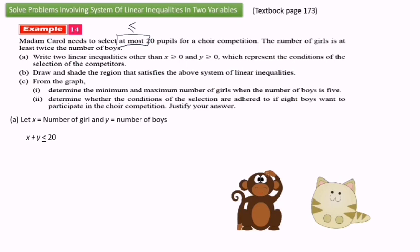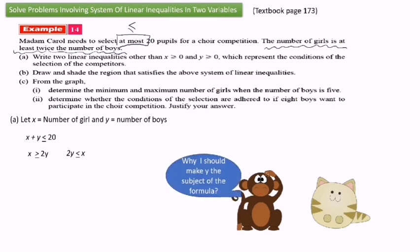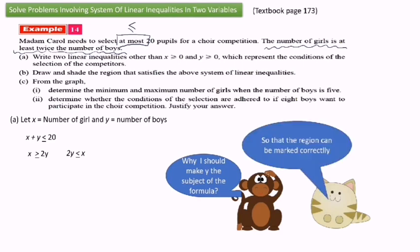The next inequality: the number of girls is at least twice the number of boys, so the linear inequality is x greater than or equal to 2y. We can write it as 2y less than or equal to x. I make y the subject of the formula so that the region can be marked correctly.